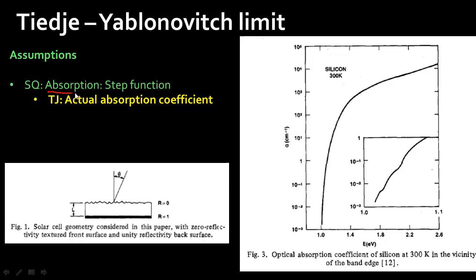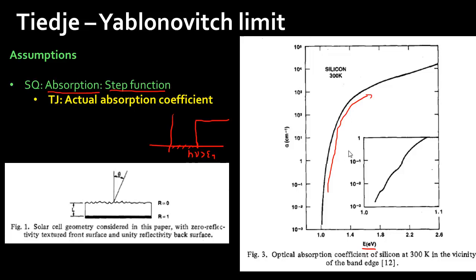The second thing Tiedje and Yablonovitch corrected was the step-function absorption assumption. Shockley and Queisser assumed all frequencies greater than the bandgap are immediately absorbed, and those below are not absorbed at all. In reality, the absorption coefficient looks like a profile where it depends upon the energy of the incoming photon rather than being exactly a step function. In fact, a photon whose energy is very close to the bandgap of silicon has a very poor absorption coefficient and can essentially escape out of the semiconductor without being absorbed at all.